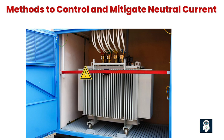2. Neutral current transformers (NCTs) are specifically designed to measure and monitor neutral currents. By installing NCTs, it becomes easier to detect excessive neutral currents, take corrective measures, and prevent potential problems in the electrical system. 3. Resistor grounding and compensation methods involve the use of resistors to limit the flow of neutral current. By introducing resistance in the neutral grounding path, the excessive neutral current can be reduced, ensuring a balanced system and protecting equipment from potential damage.